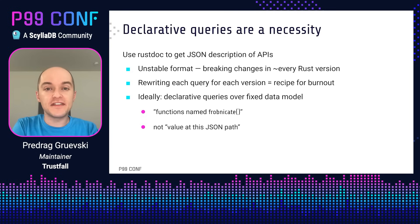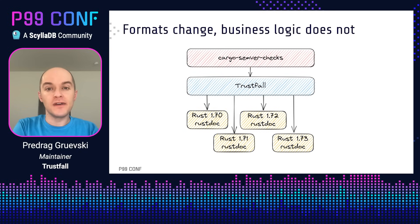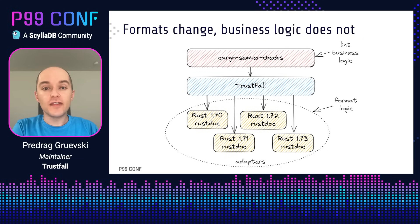In an ideal world, we'd have declarative queries over a fixed data model. Instead of writing them to load data from a specific JSON path that might change every six weeks, we would write them to do things like look up functions by name, which is the same thing no matter which Rust version we're using. If we were to draw an architecture diagram, it would look something like this: we have our linter at the top and all the different formats we need to support on the bottom. In between, there is a layer that connects the two. We'll wrap all the formats in adapters which understand all of the format-specific logic needed to extract the data we need. All of our linting business logic is represented as queries that describe the kinds of breaking changes we're looking for. And in between, we have a query engine that knows how to turn those queries into requests for data the adapters know how to look up.